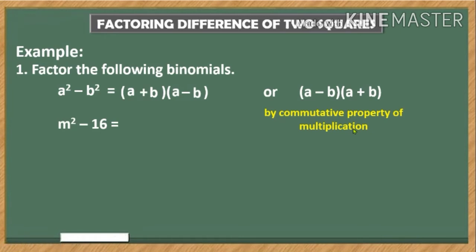For our next example we have m² - 16. Take note, we need to express each term in a square form. m² here is already in a square form, but 16 is not yet in a square form.